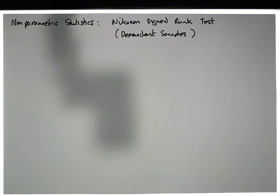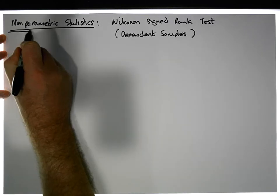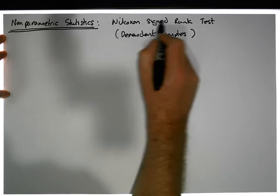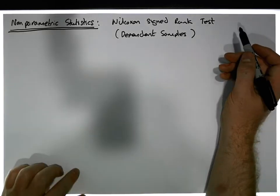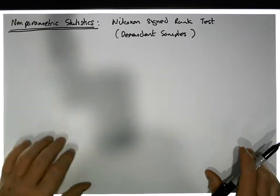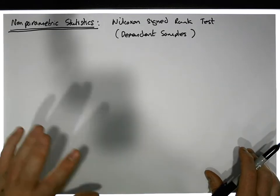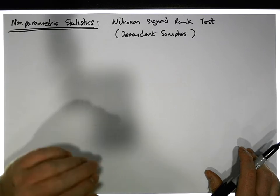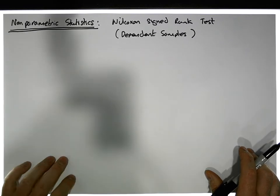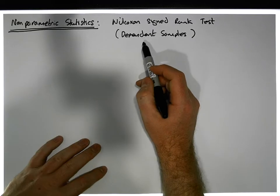Hi guys, this is Jonathan Lambert with the Mathematics Development and Support Service at National College of Ireland. In this video — another in our series dealing with non-parametric statistics — we're going to concentrate on the Wilcoxon signed rank test, which is a dependent samples test: a situation where your experimental design has a before and an after, and where the measurements are made on the same participant.